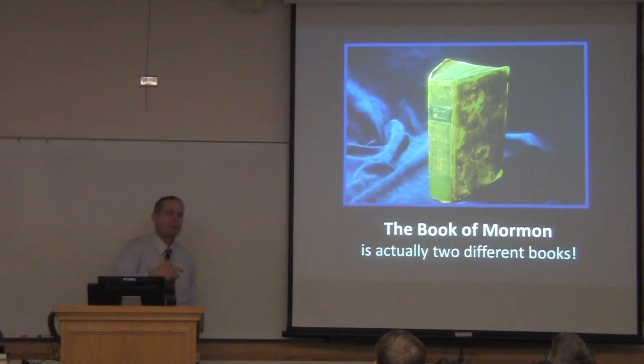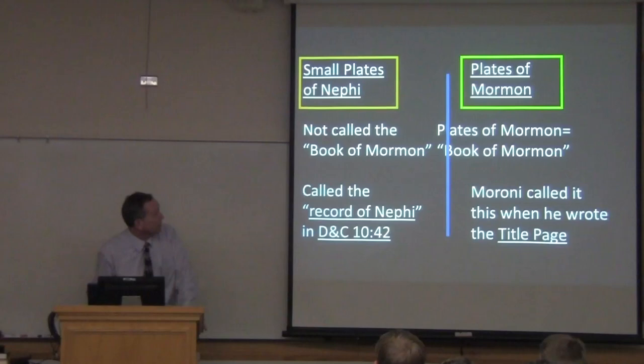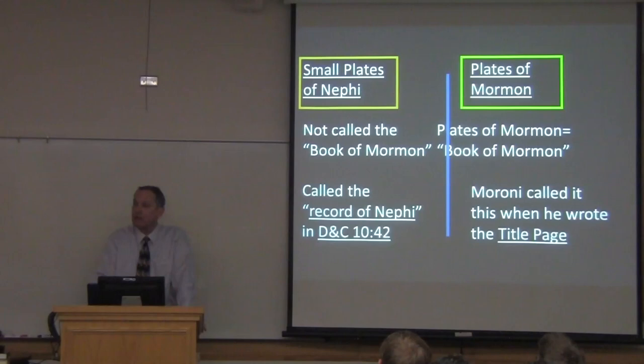Last week — this is particularly germane for those of you that weren't here — I introduced the notion that the Book of Mormon is actually two different books. You will read about this in your syllabus. We've tried to point out that the small plates of Nephi are very different in all kinds of ways: the century in which they were produced, the languages of origin, the author's social and linguistic and even religious background.